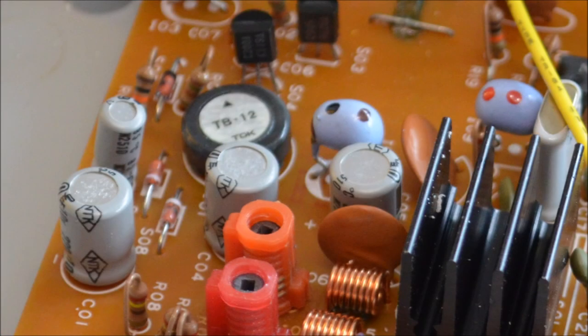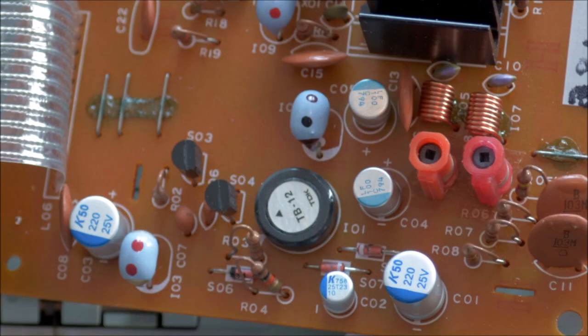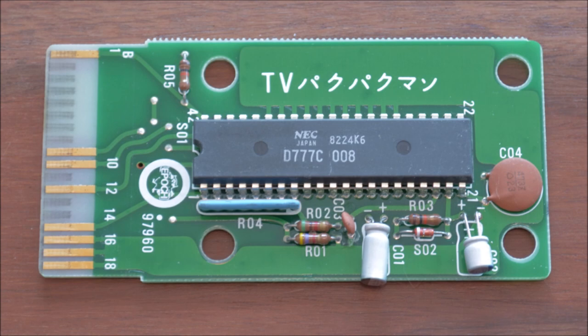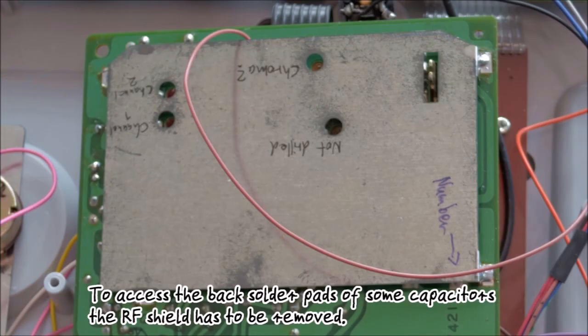Personally, I replaced each electrolytic capacitor in the console and in every game with aluminum polymer capacitors. I use these for most of my projects. They are high quality and will never leak, as they are solid. Some of the solder pads of the capacitors are located beneath the metal RF shield, which thus has to be removed during the replacement. Each game cartridge contains two capacitors.